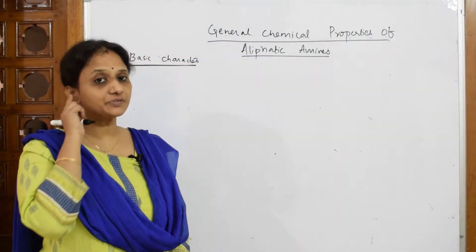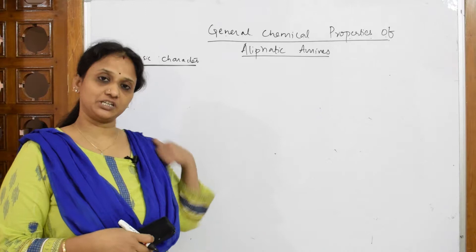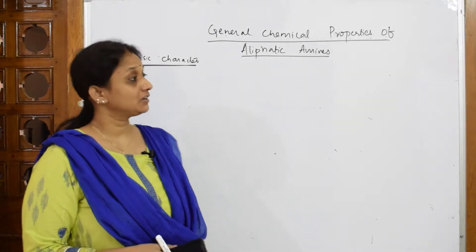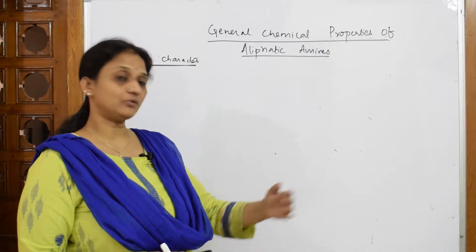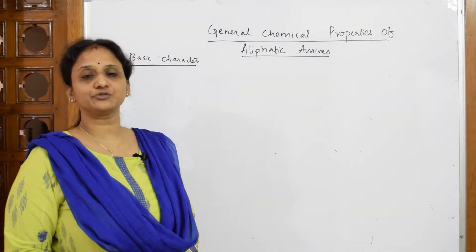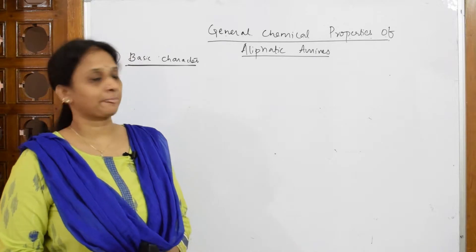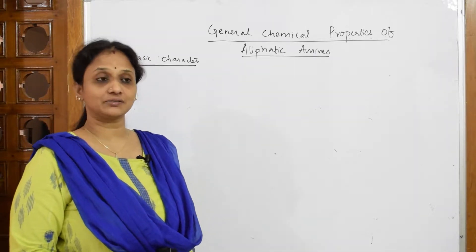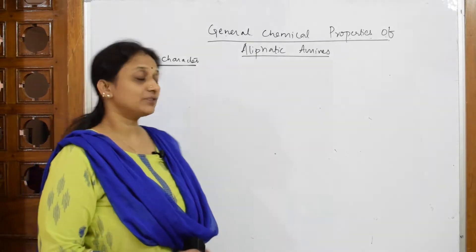Let us come back. We have done the physical properties — solubility and boiling point — and I have done certain frequently asked questions. Let us come back to the main concept, which is chemical properties. From now we'll be doing so many reasoning questions, which will make it easy for you to solve them in the exam. I'll also be doing certain reasoning questions based on chemical reactions.